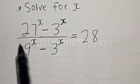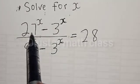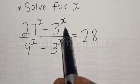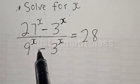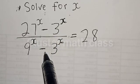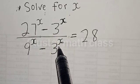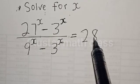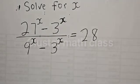Solve for x. 27 raised to power s minus 3 raised to power s, divided by 9 raised to power s minus 3 raised to power s, is equal to 28.